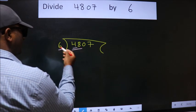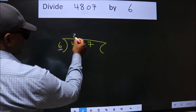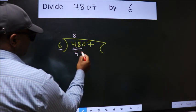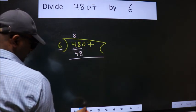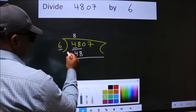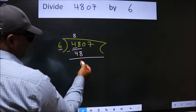When do we get 48 in 6 table? 6 times 8 is 48. Now we should subtract. We get 0.